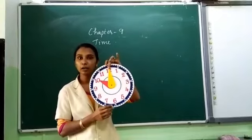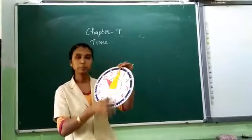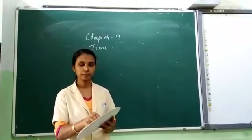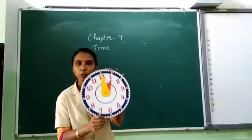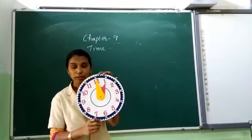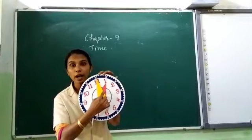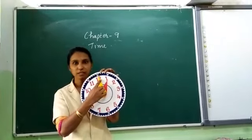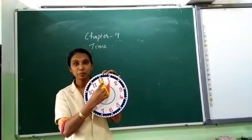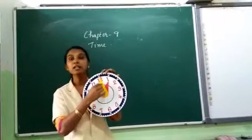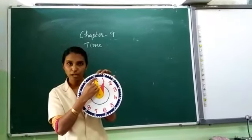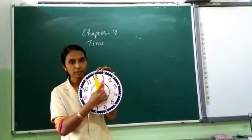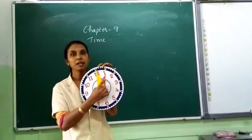Can you show the time 1 o'clock on a clock? Let me show. Read the time — what is the time now? It is 1 o'clock. The short hand, the hour hand, points to 1 and the minute hand points to 12. So you are studying to read the time in hours. When the minute hand points to 12, look at the hour hand to find the time in hours.